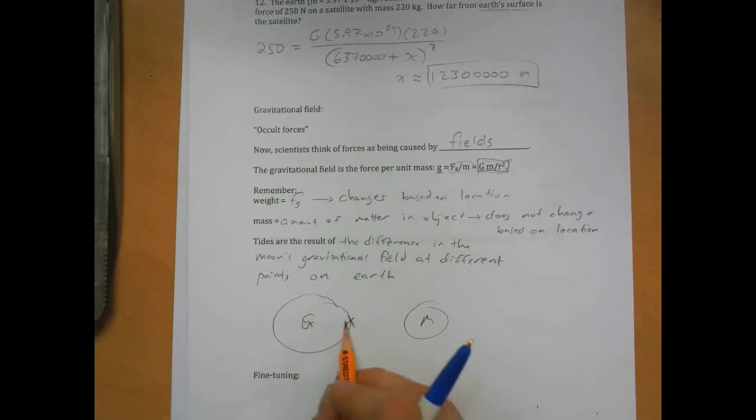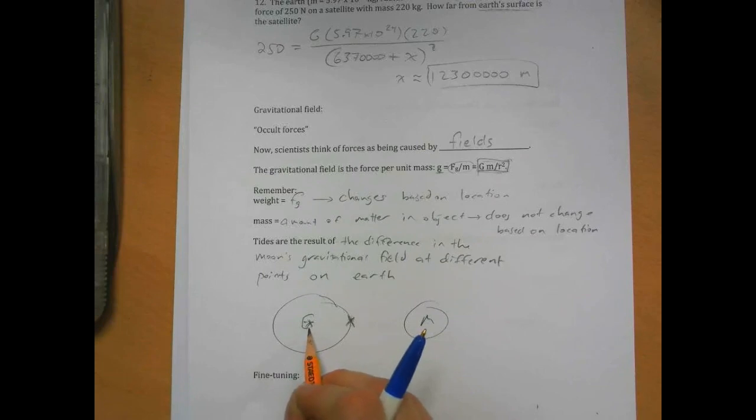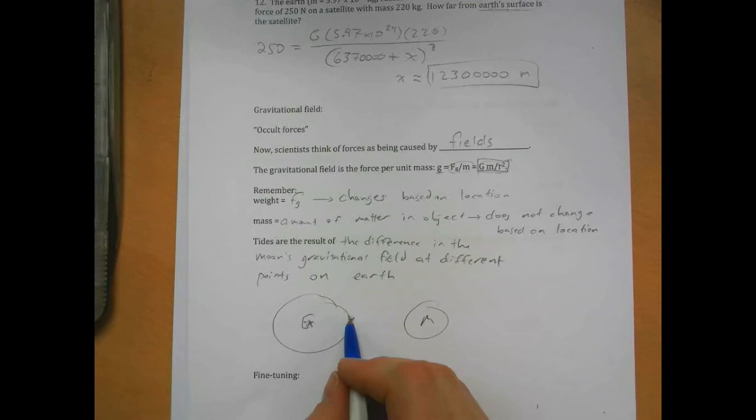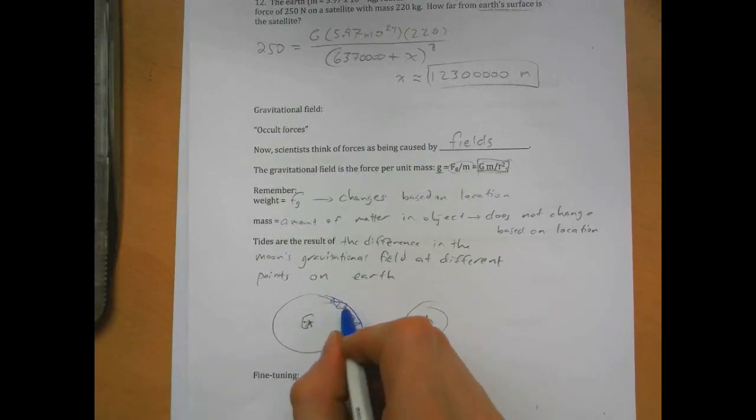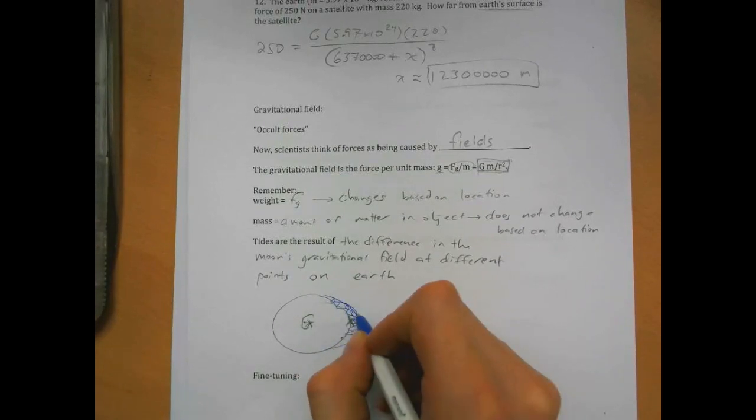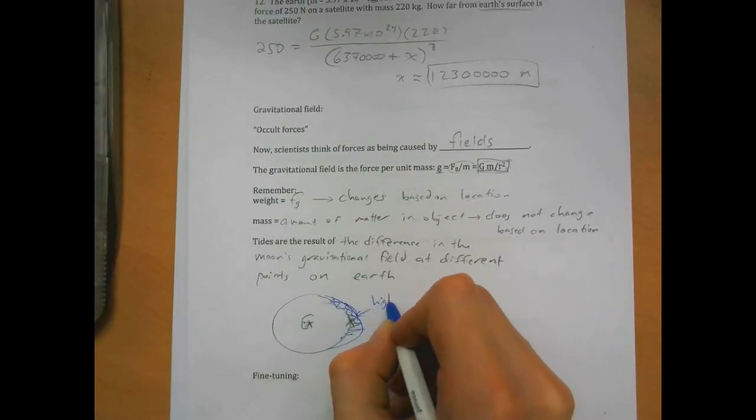So the moon's gravitational field is bigger at the point closer to the moon, smaller at the point farther away. So that means the moon pulls the water here at earth's surface more strongly than it pulls the land, the mass that makes up the solid part of the earth. So because it pulls the water more strongly, the water over here kind of bulges out away from the earth's surface, which creates a high tide.